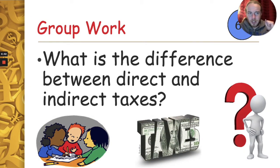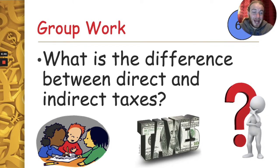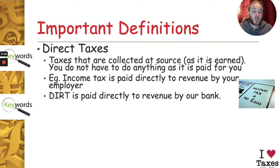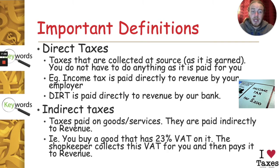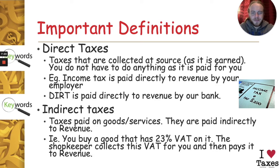Having gone through those taxes, what is the difference between direct and indirect taxes? Direct taxes are taxes that are collected at source — they're paid directly to the government and you never actually get to see the money. Income tax, for example, goes straight to the government via PAYE, PRSI, and USC. DIRT is another one paid directly to Revenue by the bank. Indirect taxes are the opposite — they're taxes on goods and services paid indirectly to the Revenue, collected by someone else. When you go to the shop and buy something, for example chocolate milk, the shopkeeper collects the VAT on those items and then pays the government separately every month or thereabouts.